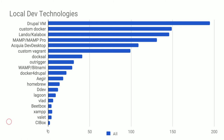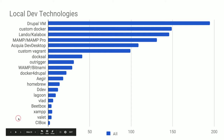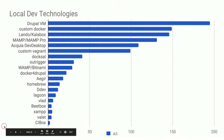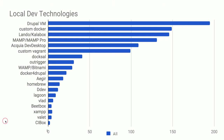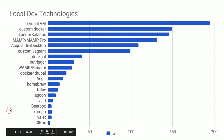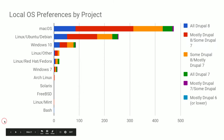We asked what you use for your local dev technology. The question was: did you use custom Docker, custom Vagrant, or the local operating system? That was a little confusing in hindsight — I'd probably rewrite it differently. We also provided a list of named solutions.